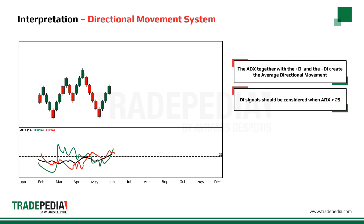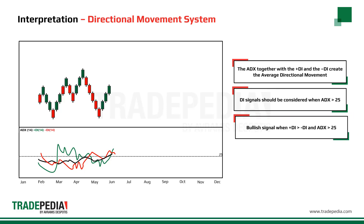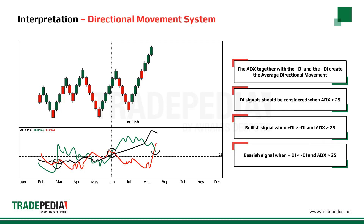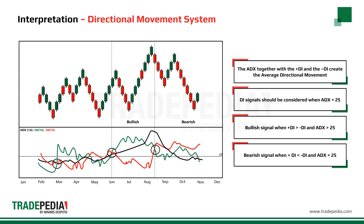Signals from plus and minus DI's should only be considered when ADX is greater than 25. The bullish signal generated when plus DI crossed above minus DI should not be acted upon as ADX was below 25. The next bullish signal, however, is confirmed by ADX being above 25. The bearish signal when plus DI crossed below minus DI is a valid signal as ADX is above 25.